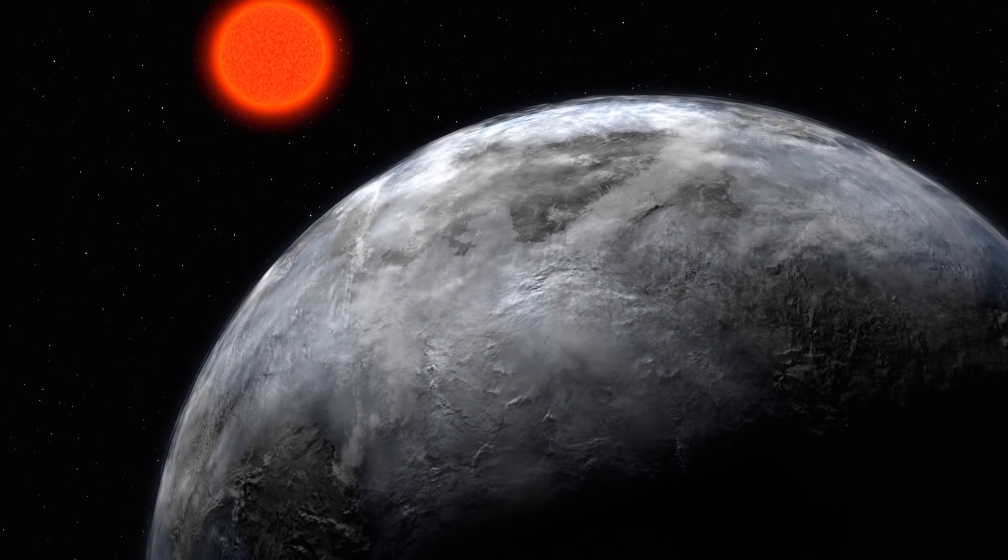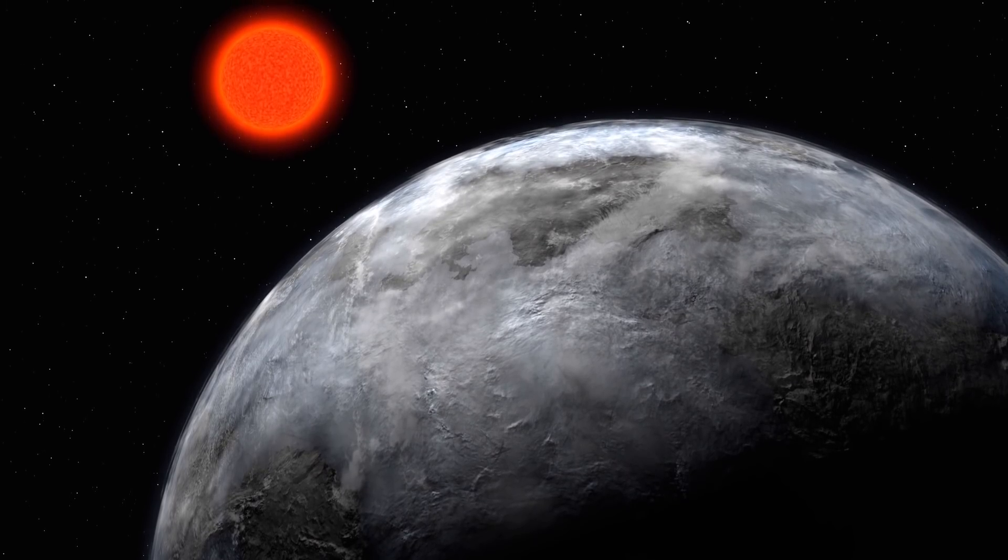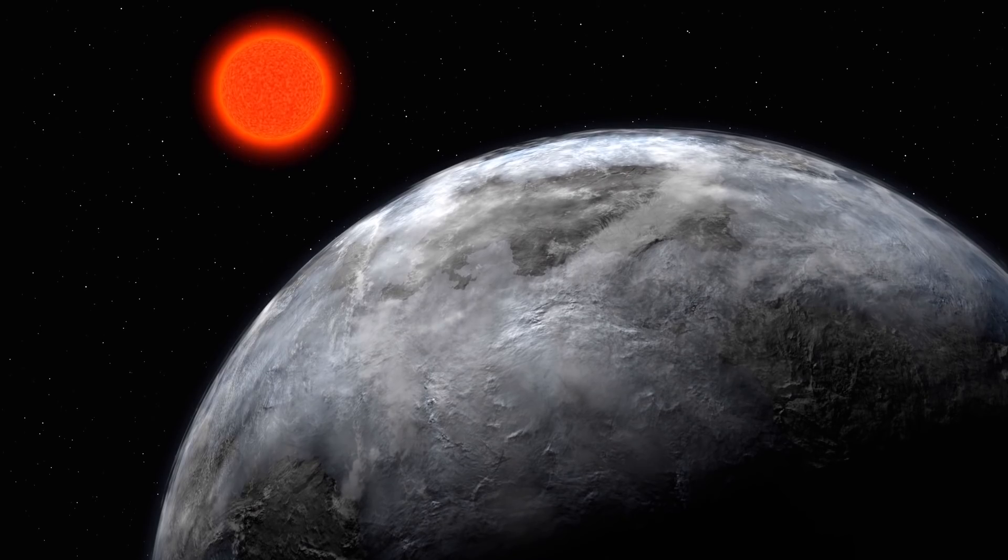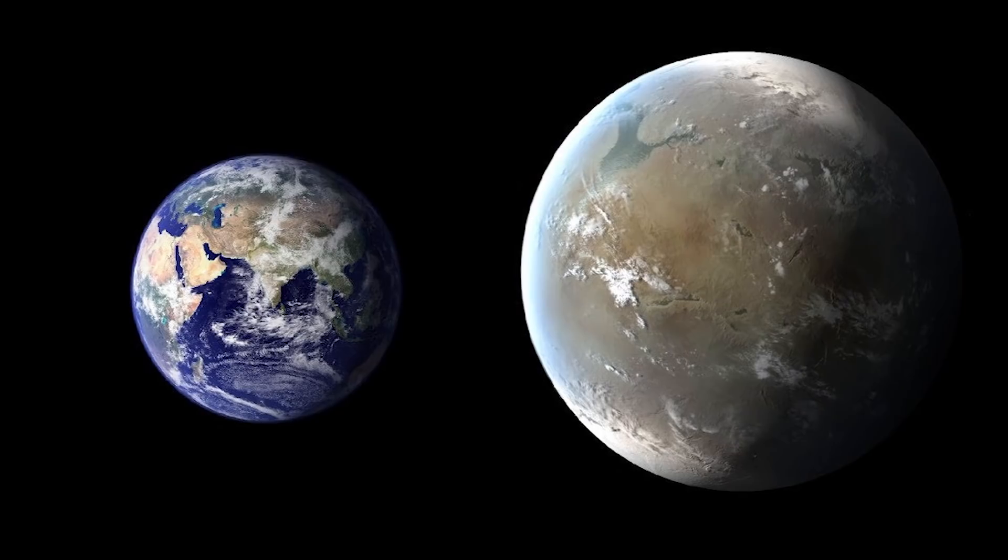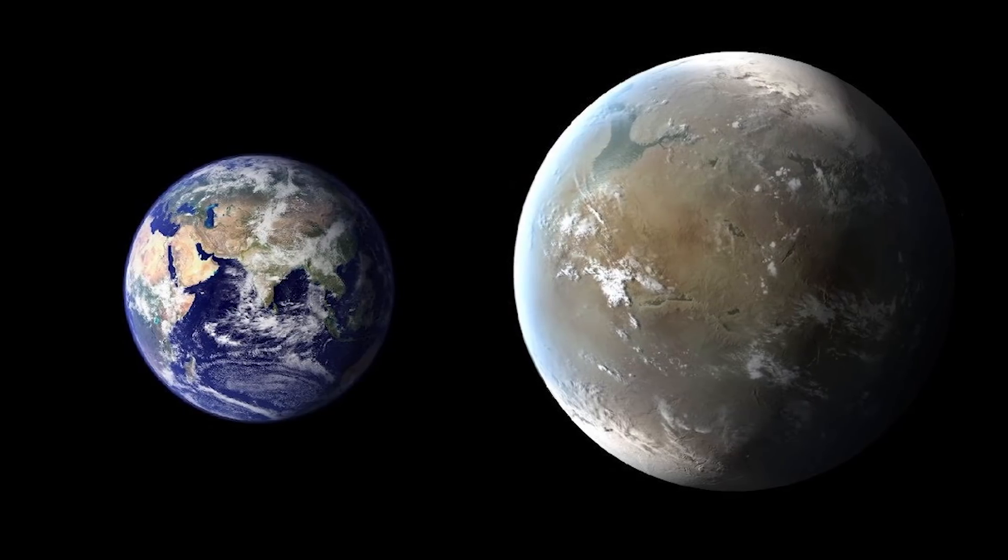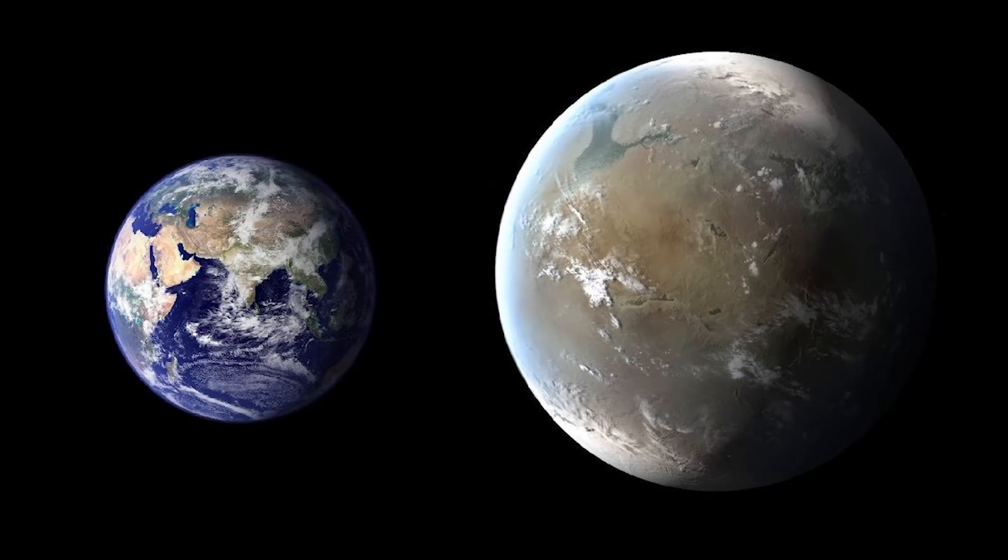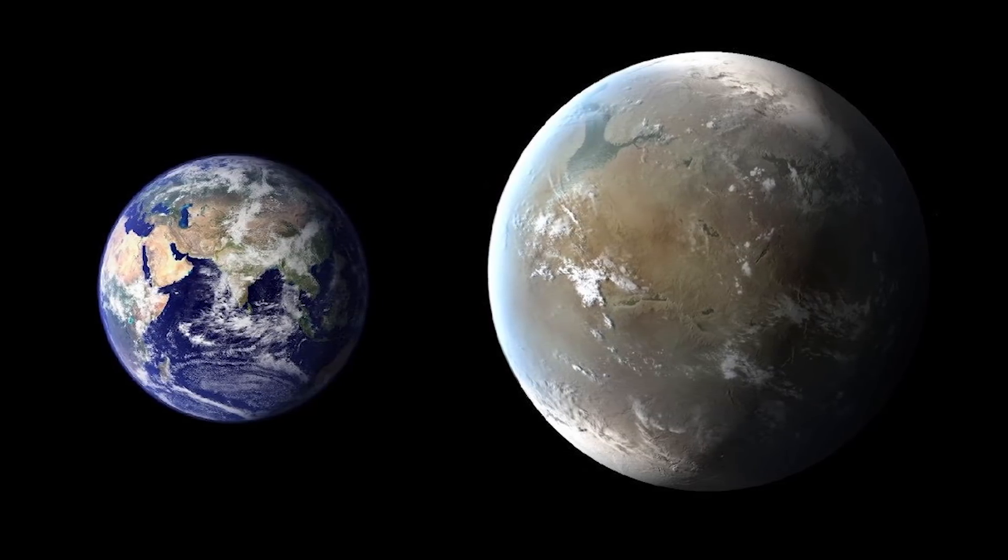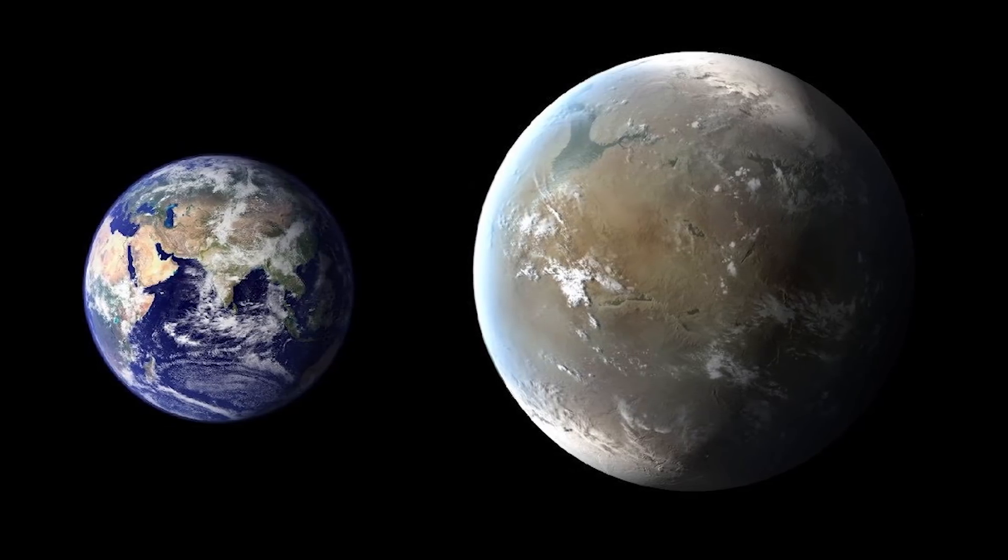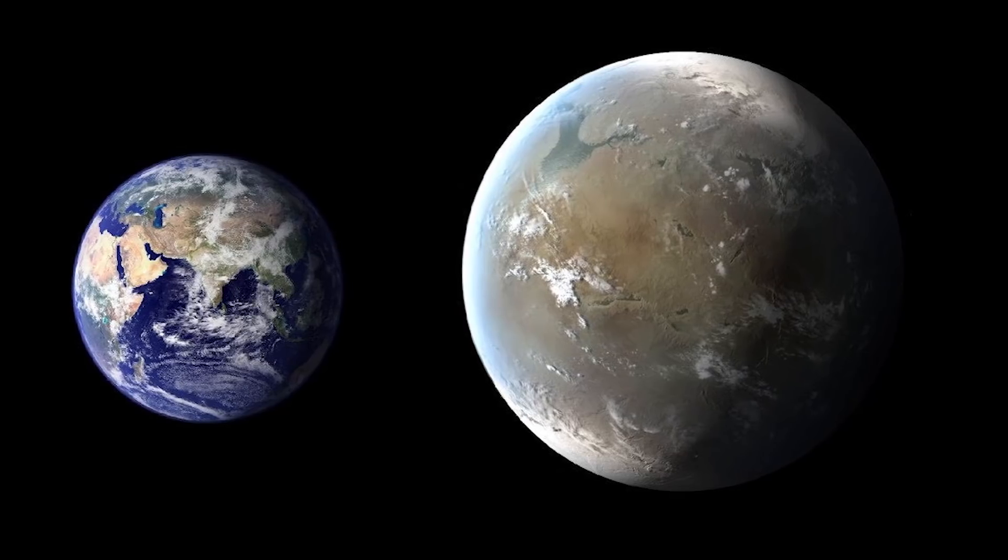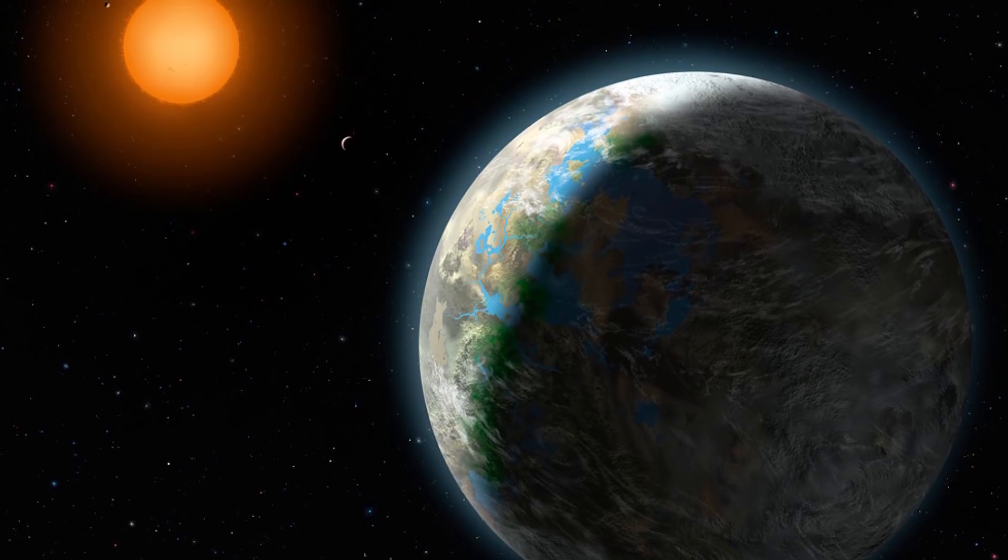The two-faced hell world, Gliese 581c. Gliese 581c is a type of exoplanet called a super-Earth, meaning that it has many of the same characteristics that Earth has, such as being dense and rocky, as well as being within the habitable zone of its parent star. What makes it super is the fact that the exoplanet has a mass about 5.5 times that of Earth. 581c seemed, at first blush, to be a great candidate for life.